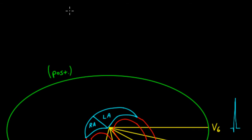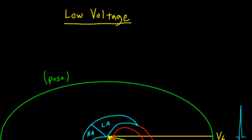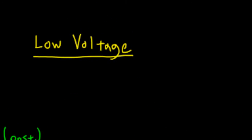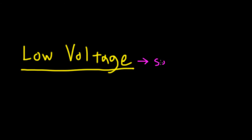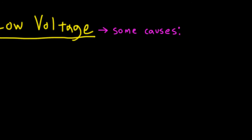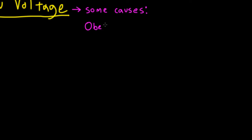Now let's talk about low voltage. In some patients, you'll notice that the QRS complexes are very small in amplitude — we call this low voltage. Can you think of some disease processes that can produce an EKG with low voltage? You can see low voltage in patients who are obese because there is increased tissue between the heart and the chest wall. Similarly, patients with emphysema can have low voltage due to increased inflation of the lungs within the chest cavity.